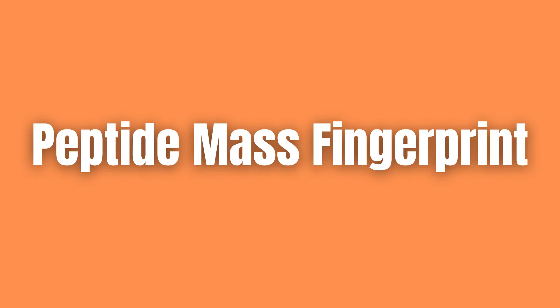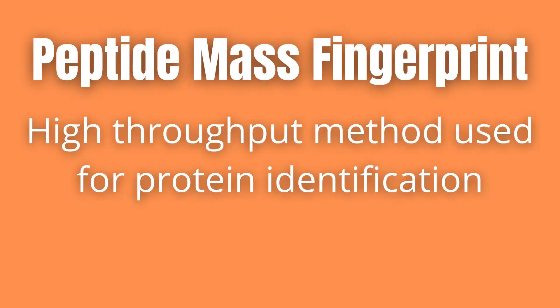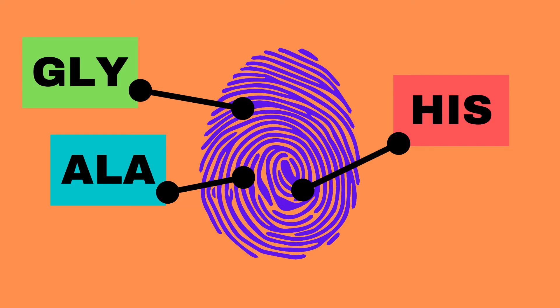Peptide mass fingerprint, or PMF. What is it? How does it work and why is it useful? Peptide mass fingerprinting is a high-throughput method used to identify proteins. A peptide is a protein fragment, and these fragments are what create a fingerprint for the protein.